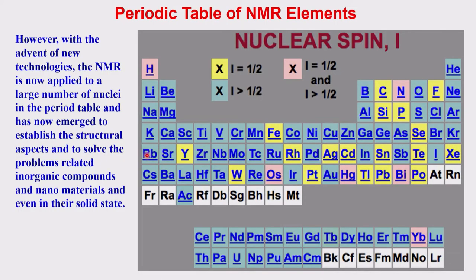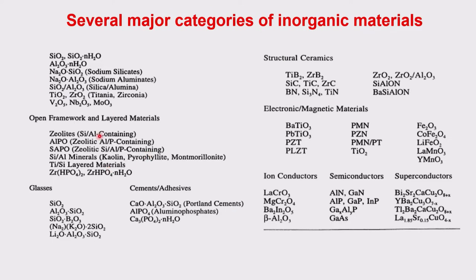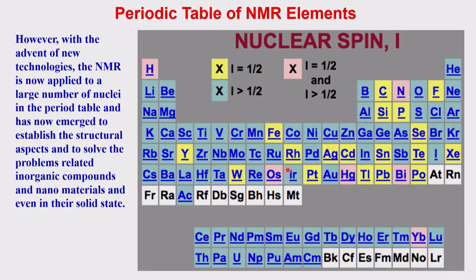Having looked at this, you can see nuclei like silicon, aluminium, sodium, zirconium, titanium, vanadium, boron, and lead in these materials. Which of these nuclei can we study and which cannot? The nucleus may have spin I = 0, I = 1/2, or I > 1/2. Some atoms have more than one isotope — one isotope could be spin-1/2 and another could have I > 1/2.